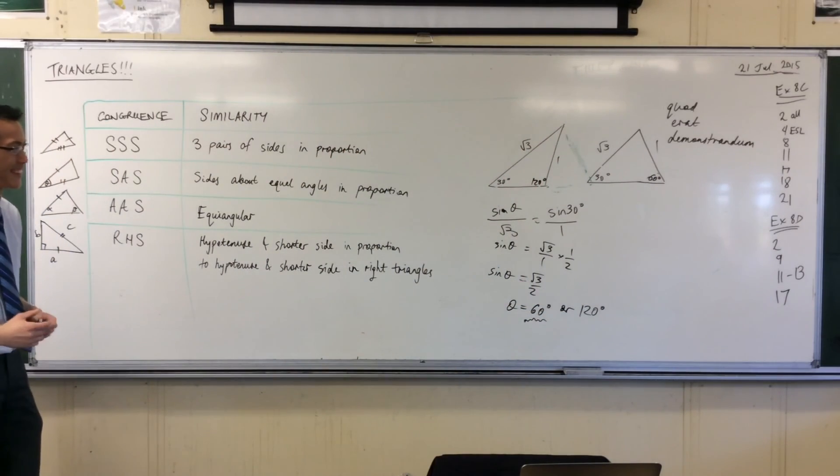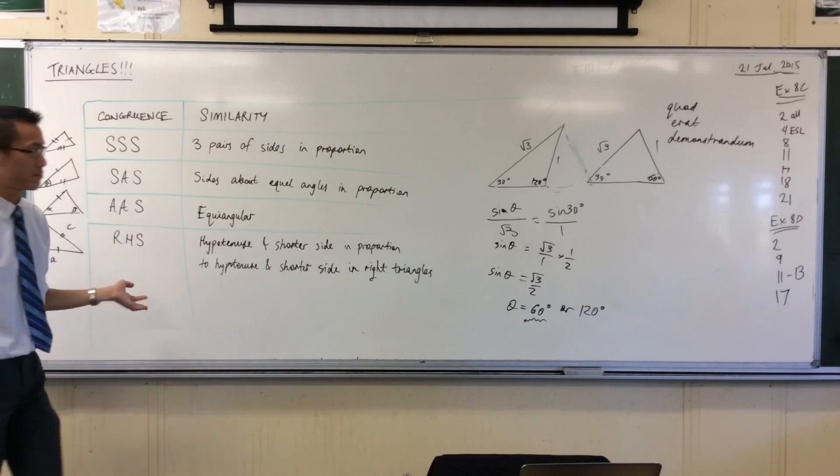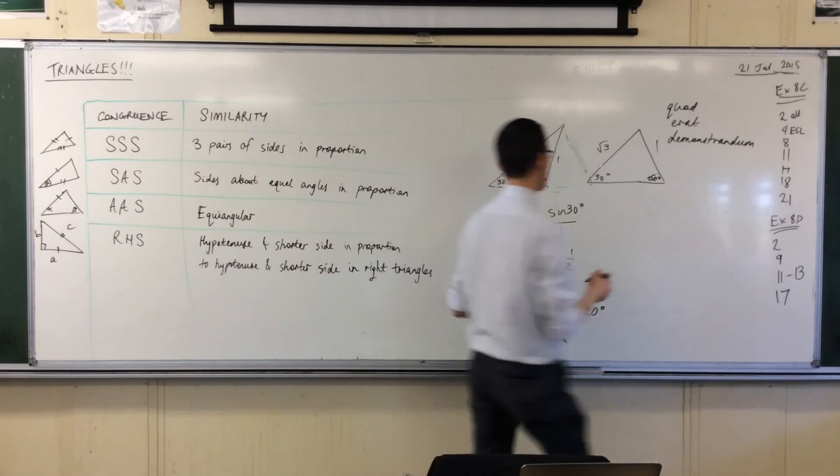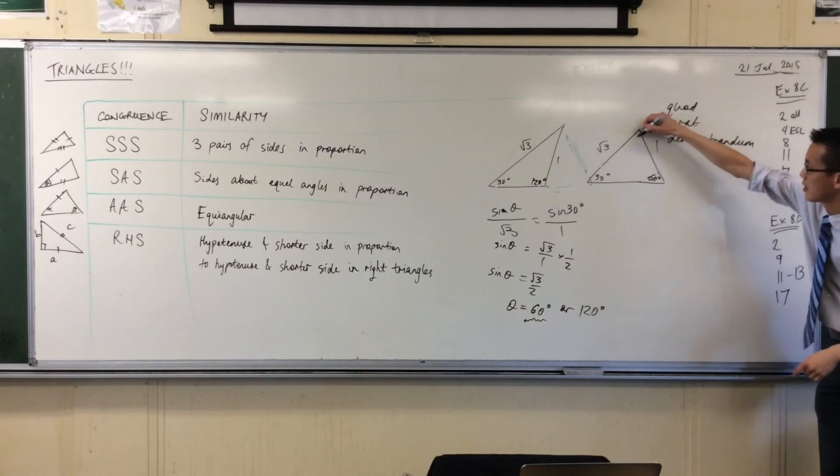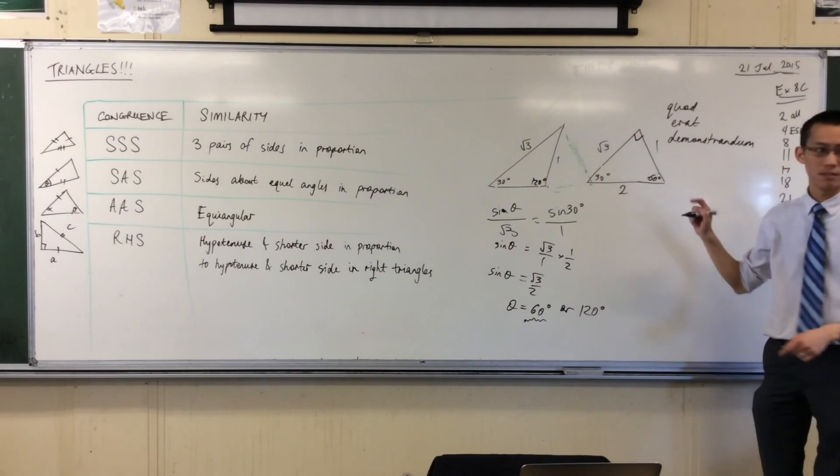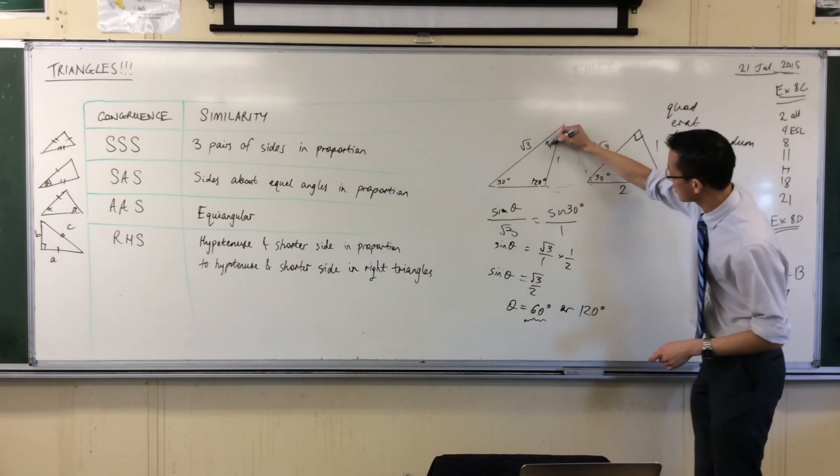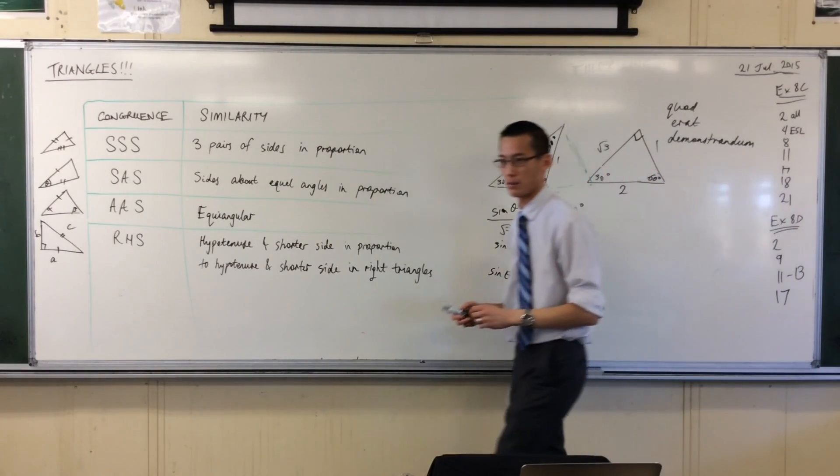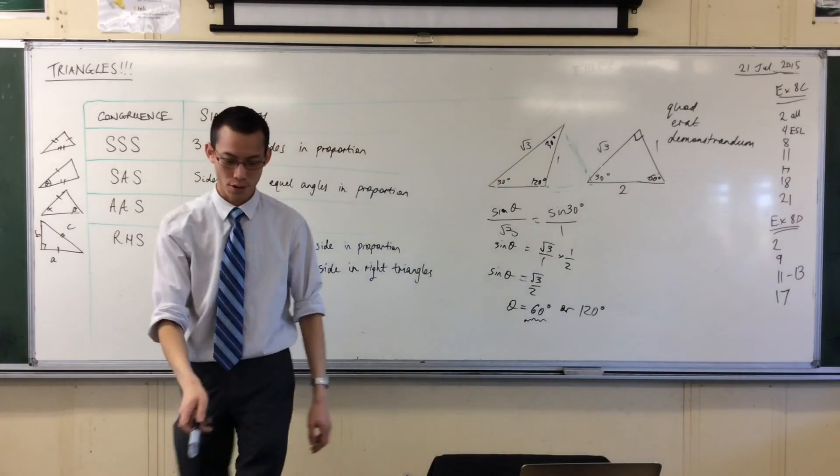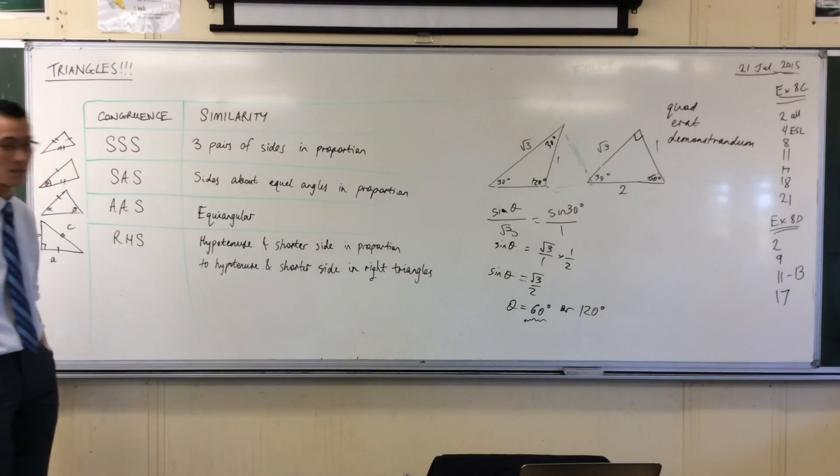Correct. Okay. You happy there? So by the way, just in case you're curious, because you can see, right? This creates the familiar 30-60-90 triangle, and this creates an isosceles triangle, which is completely different, okay? So very, very different things because of this sine rule.